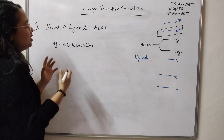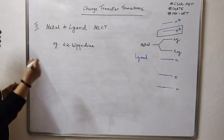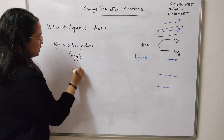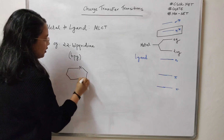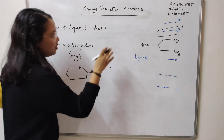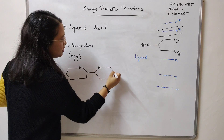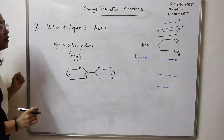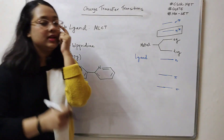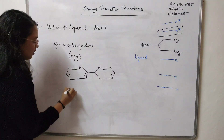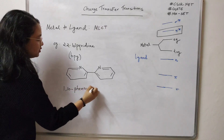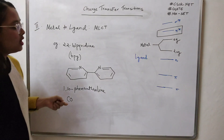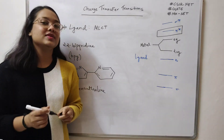One common example of a ligand that shows metal-to-ligand charge transfer transitions is 2,2'-bipyridine, represented as bpy. This compound is aromatic and also has low-lying π* orbitals. Other examples include 1,10-phenanthroline and carbon monoxide (CO). These ligands form complexes in which you will find metal-to-ligand charge transfer transitions.